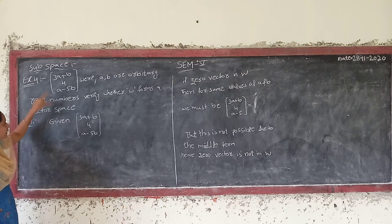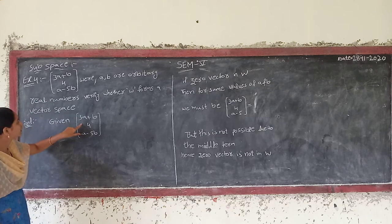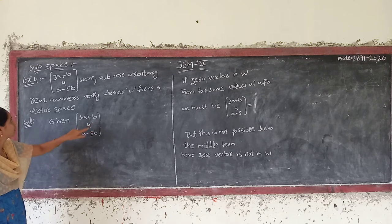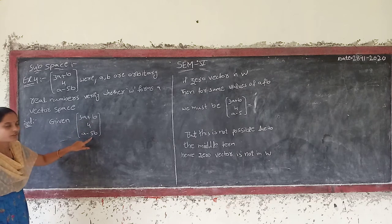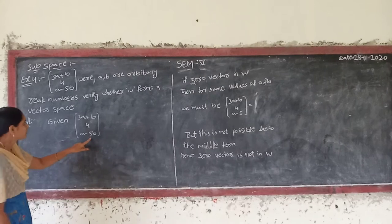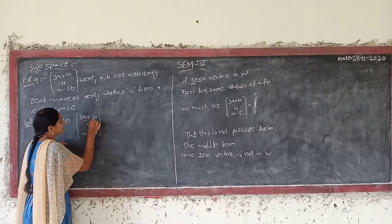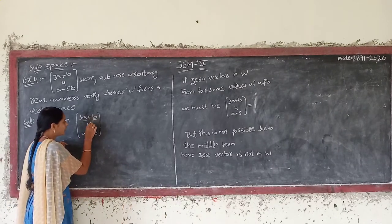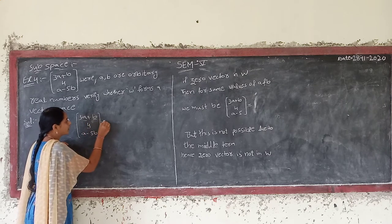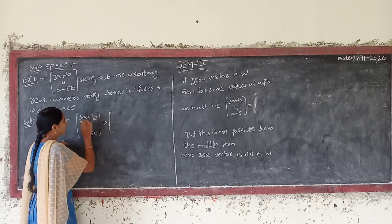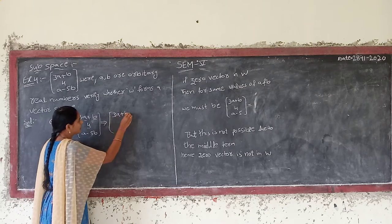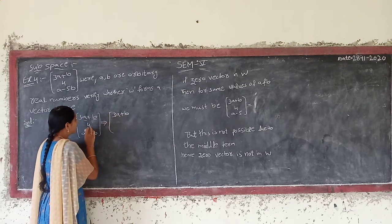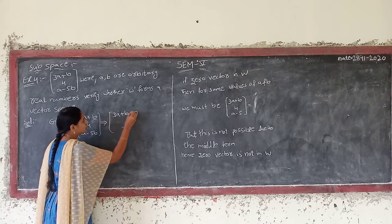Given that the vector is (3a plus b, 4, a minus 5b), so 4 is a constant, and 0 is also a constant. In 3D, (a plus b, 5, 0), so 0 is a constant. 3a plus b...